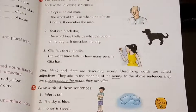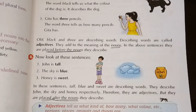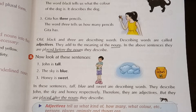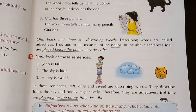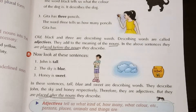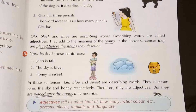Now come to the other examples. John is tall — the word 'tall' is describing John, who is a boy. The sky is blue — 'blue' is describing the sky, so 'blue' is adjective and 'sky' is noun. Honey is sweet — 'sweet' is describing honey, which is a thing. John, sky, and honey are all nouns, and 'tall', 'blue', and 'sweet' are describing these nouns, so they are known as adjectives. But here you see that the adjectives are placed after the nouns. So we come to know that adjectives can be placed before the nouns or after the nouns.